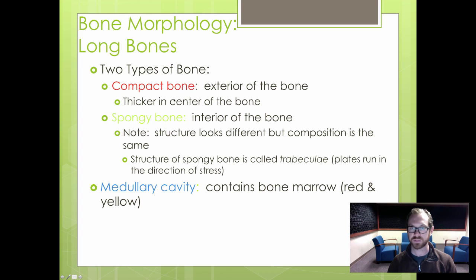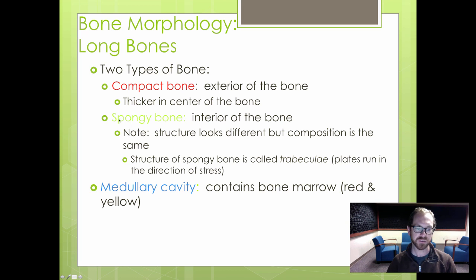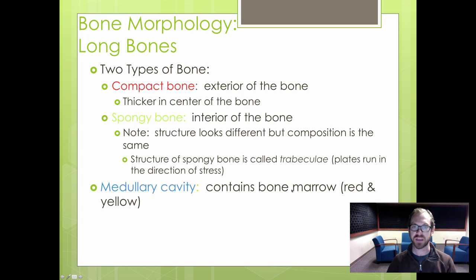Within our bones, we have two types of bone tissue. Compact bone is on the exterior and is thickest in the center. Spongy bone is on the interior and appears to have open space within it — that's why we call it spongy. The composition is the same between both types, but the structure differs. The medullary cavity is an important part of bone where bone marrow is contained, where hematopoiesis occurs and blood cells are produced. There are two types of bone marrow: red and yellow.